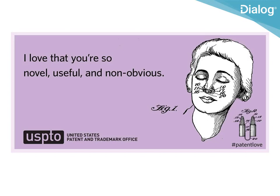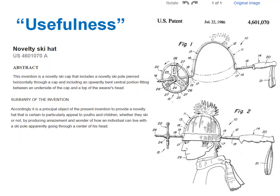This, by the way, is a valentine that was created by the US Patent Office. The usefulness requirement nowadays is almost taken for granted. This is a patent for a novelty ski hat — a variation on Steve Martin's arrow through the head gag — that makes it look like you have a ski pole impaled through your head. The patent says its usefulness lies in producing amazement and wonder of how an individual can live with a ski pole going through the center of his head. So the usefulness test sets the bar pretty low, and the patent examiner will mainly be applying the novelty test. And it's your job, as a patent searcher, to find out whether the patent idea is new or if it is already out there, because if it is, you're going to have trouble getting a patent.